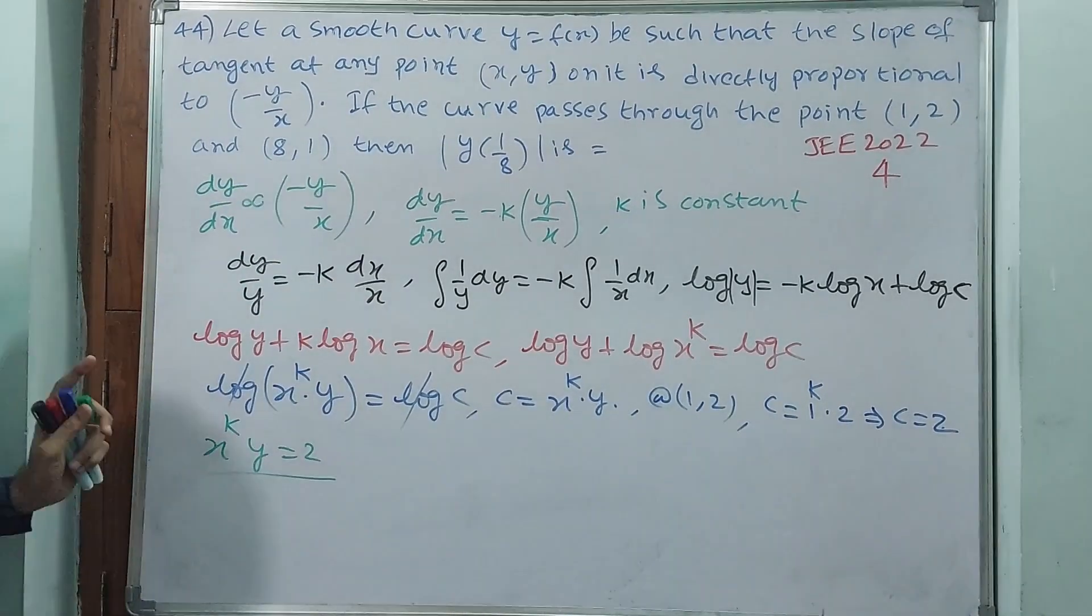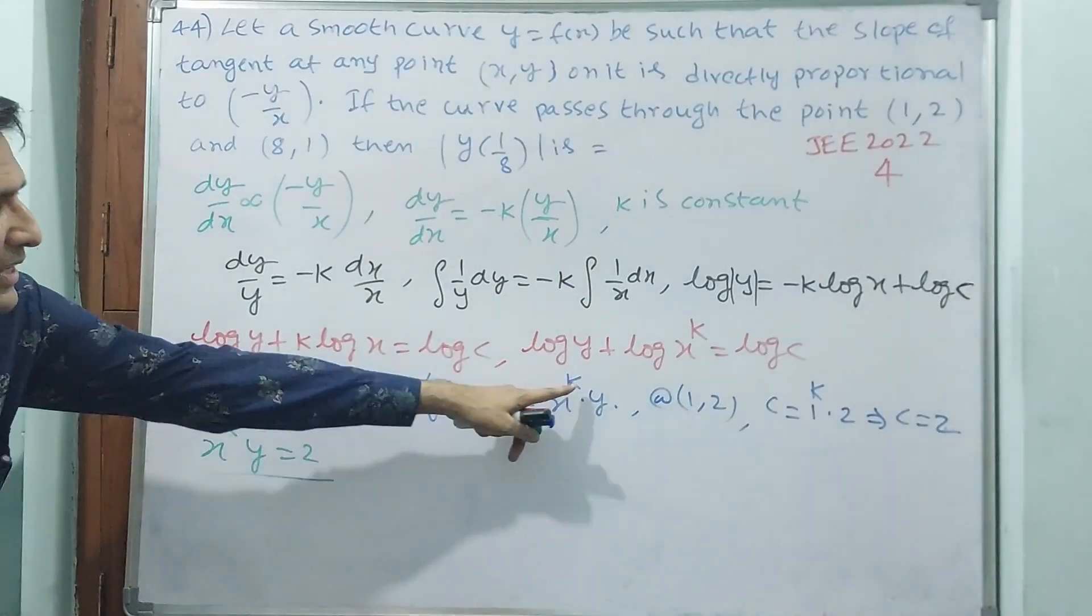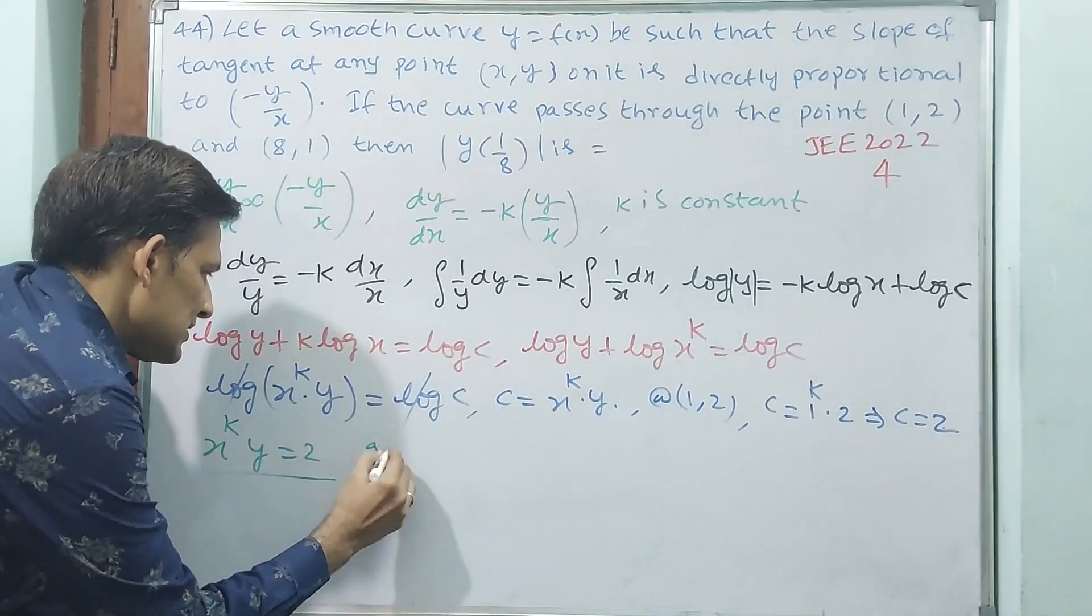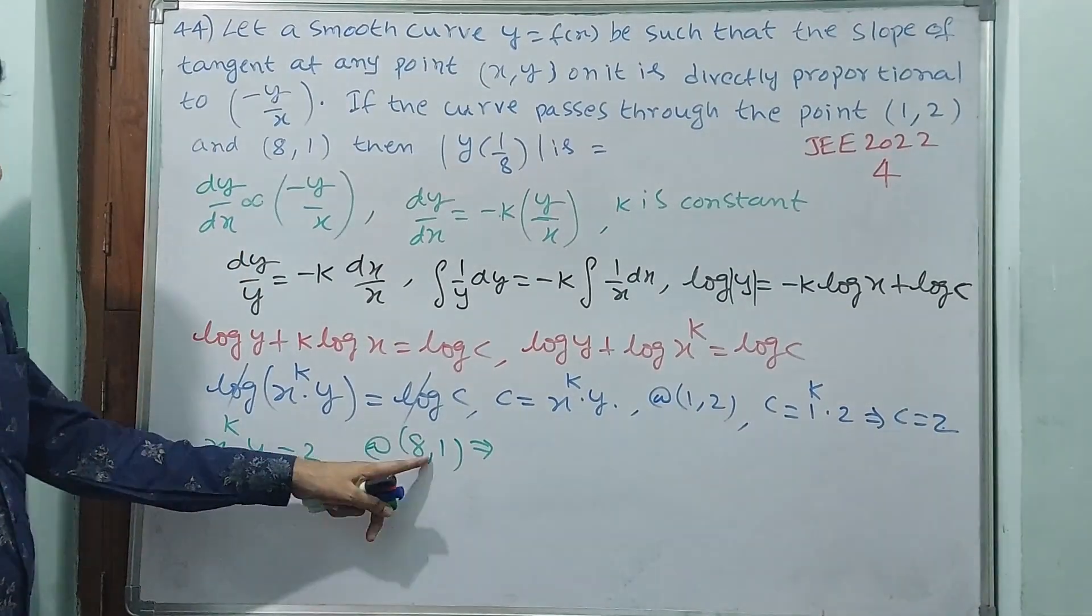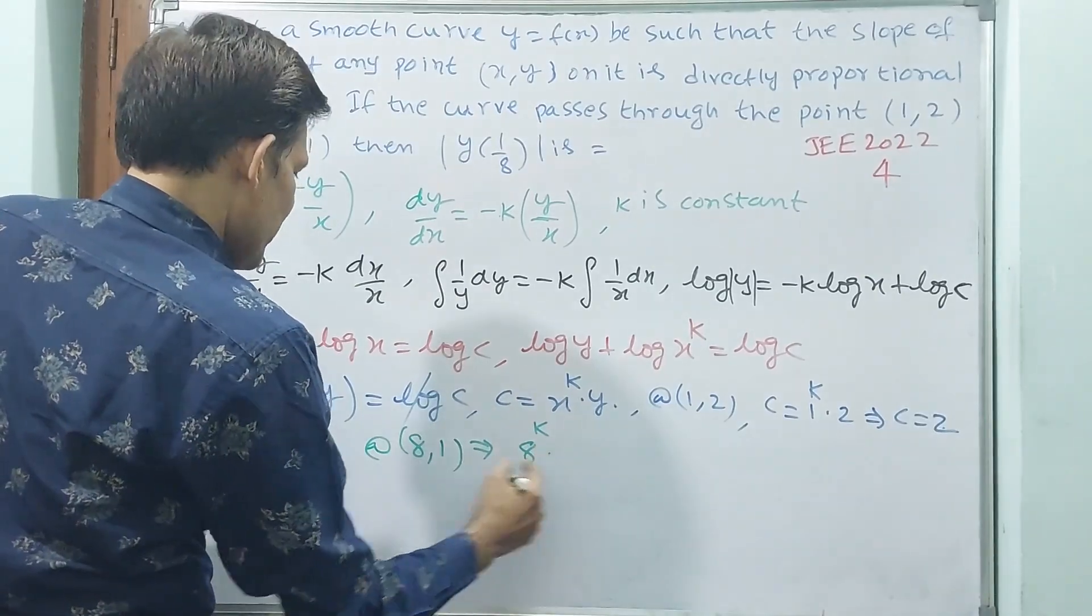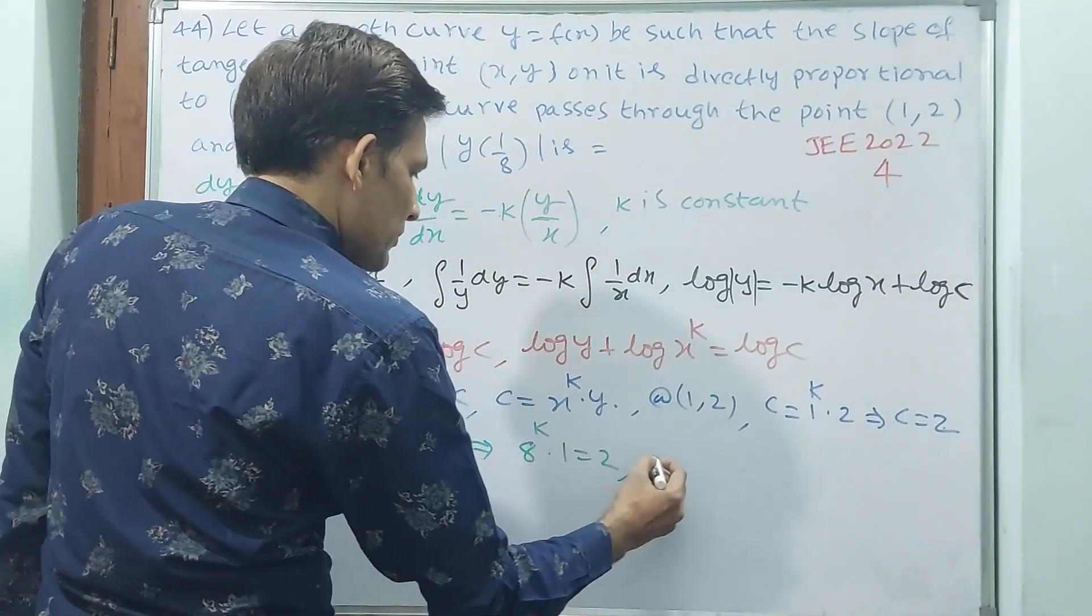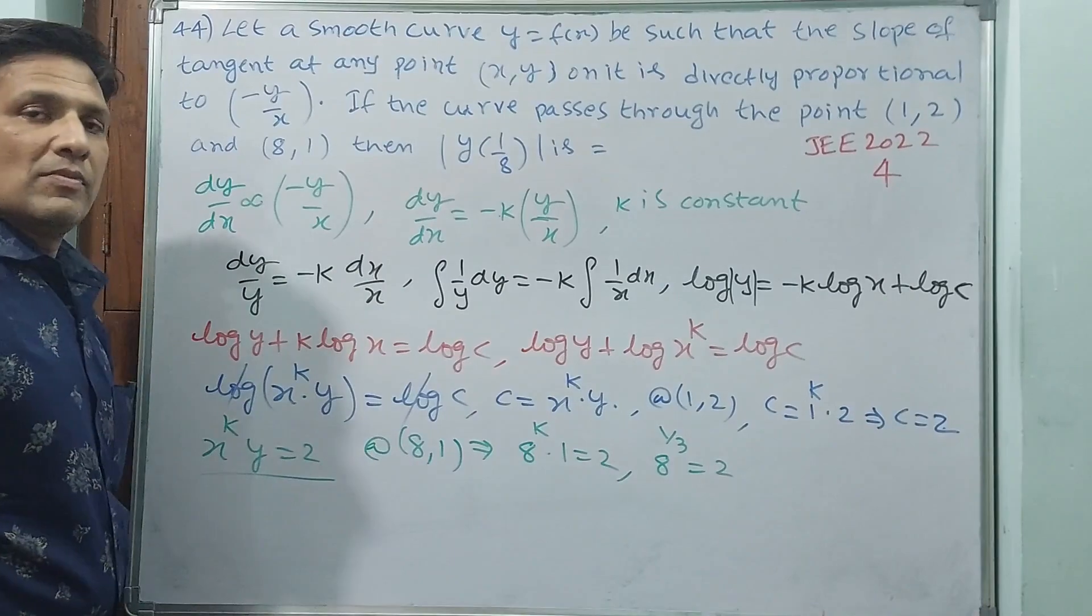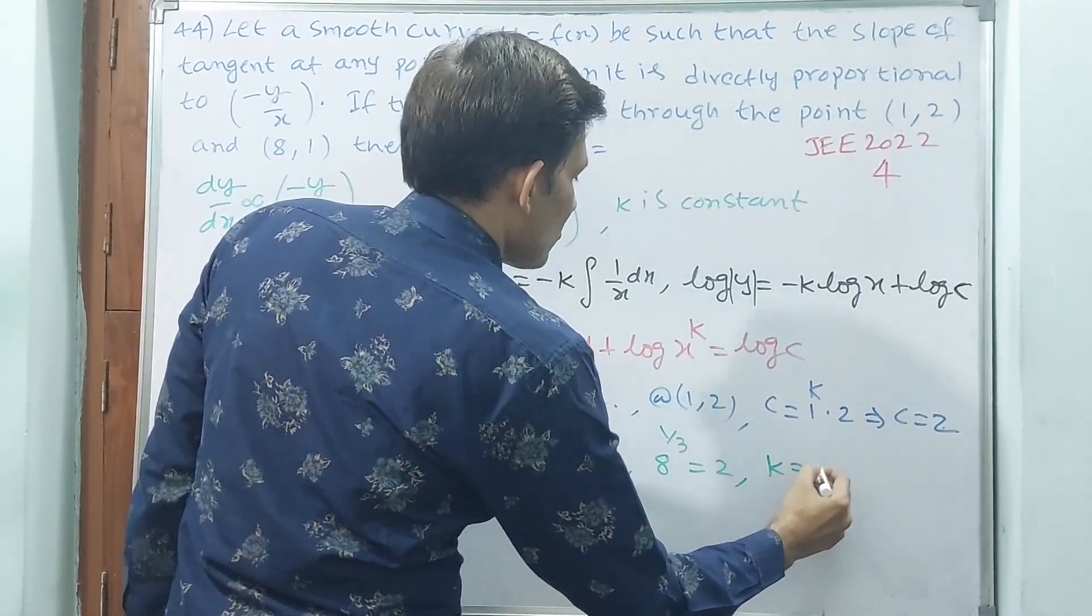Now also (8,1). Why? Because here still you don't know k value. You may have c value, but k value you don't know. For finding k value, another hint is (8,1). At (8,1) implies x is 8, 8 power k into y which is 1 is equal to 2. That means 8 to the power k is equal to 2. 8 to the power 1/3 is equal to 2. That means k is equal to 1/3.